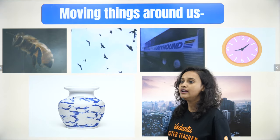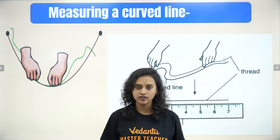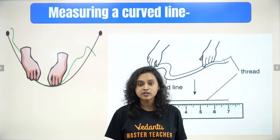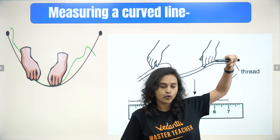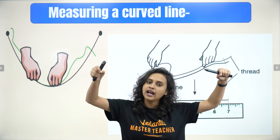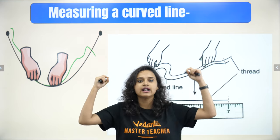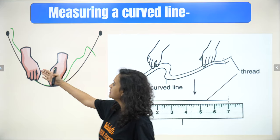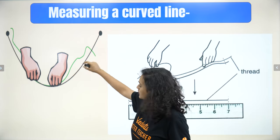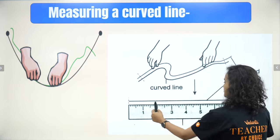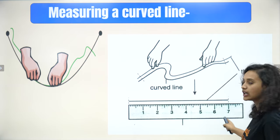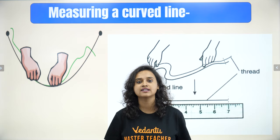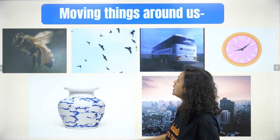Now let's understand how to measure a curved line. Take a thread, fix one point firmly on the curved line, place it along the curve, and note the endpoint. Then take the thread, put it straight on a scale — and there you have your reading. That's it. For any curved line, you can always use this thread method.